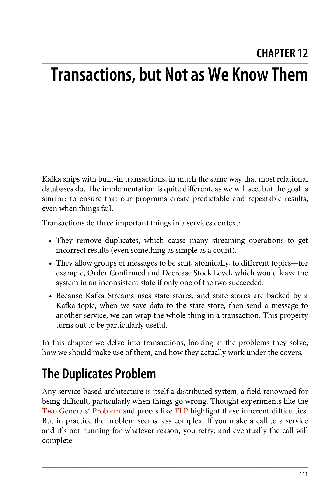Transactions do three important things in a services context. They remove duplicates, which cause many streaming operations to get incorrect results, even something as simple as a count. They allow groups of messages to be sent atomically to different topics — for example, order confirmed and decreased stock level — which would leave the system in an inconsistent state if only one of the two succeeded. Because Kafka Streams uses state stores, and state stores are backed by a Kafka topic, when we save data to the state store and then send a message to another service, we can wrap the whole thing in a transaction. This property turns out to be particularly useful.